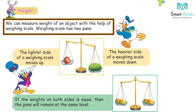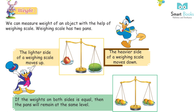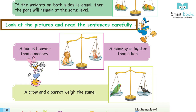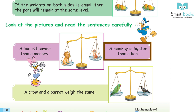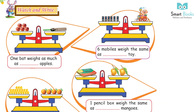Weight: We can measure the weight of an object with the help of a weighing scale. A weighing scale has two pans. The lighter side of the weighing scale moves up. The heavier side moves down. If the weight on both sides is equal, the pans remain at the same level. A lion is heavier than a monkey. A monkey is lighter than a lion. A crow and a parrot weigh the same.